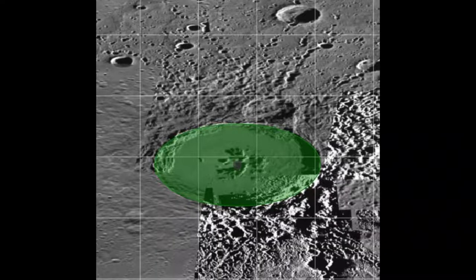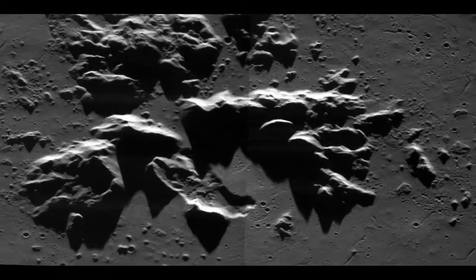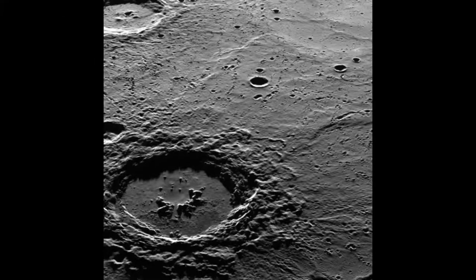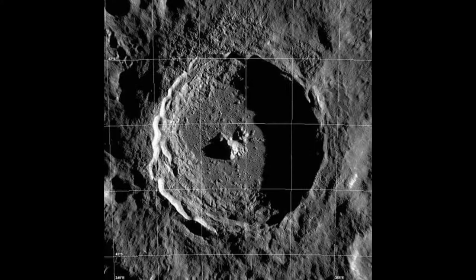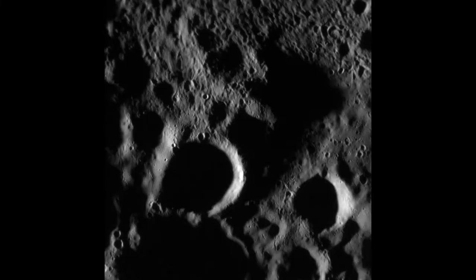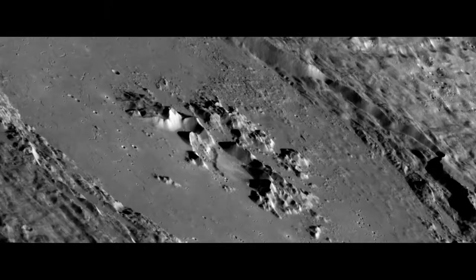This impact crater is 110 km in diameter and exhibits a complex crater structure with a smooth floor, wall terraces, and a central peak complex, which makes it stand out from its neighboring craters. The chains of smaller craters surrounding Abedin are secondary craters, most likely caused by the ejected debris from the initial impact.